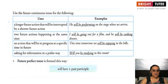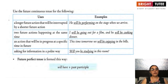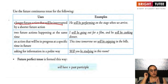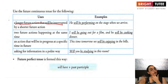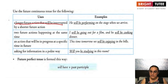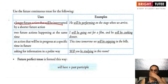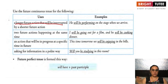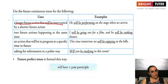When do we use the future continuous tense? First, when you are talking about a longer future action that will be interrupted by a shorter future action. There are two actions — one long and one short — and the longer action will be interrupted by the shorter. For example: we will be performing on the stage when we arrive. The longer action is performing and the shorter is arriving. They will be eating food when we knock the door. They will be playing cricket when we enter the room.